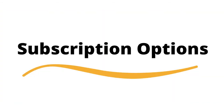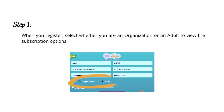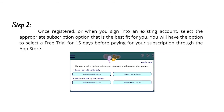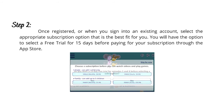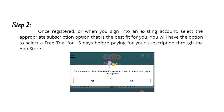Subscription Options. Step 1: when you register, select whether you are an organization or an adult to view the subscription options. Step 2: once registered, or when you sign into an existing account, select the appropriate subscription option that is the best fit for you. You will have the option to select a free trial for 15 days before paying for your subscription through the App Store.